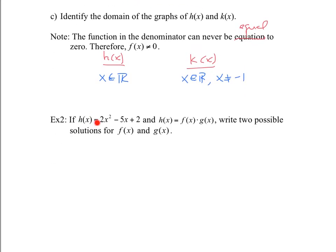Alright, if h of x is equal to 2x squared minus 5x plus 2, and h of x is equal to f times g, write two possible solutions for f and g. Basically, what I'm asking you here is give me two different options for f and g if h is this. Okay, well, there's one obvious one, that h of x could be just the factors. So if we factor this, so it'd be 2x and x, it'd be minus 2 minus 1. So this means, therefore, f of x could be 2x minus 1, and g of x could be x minus 2.